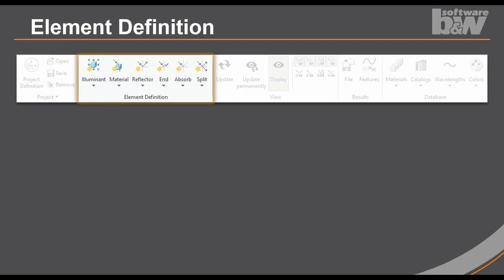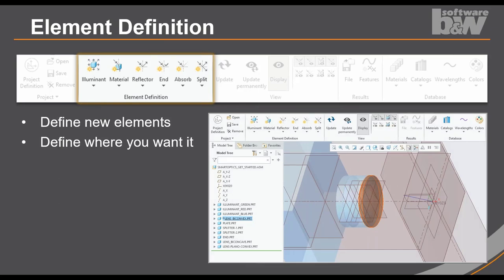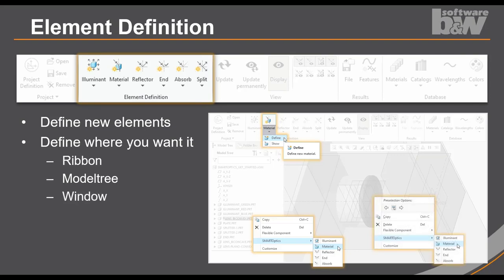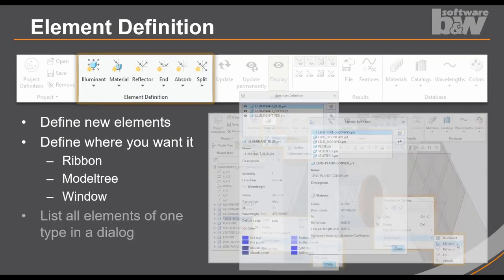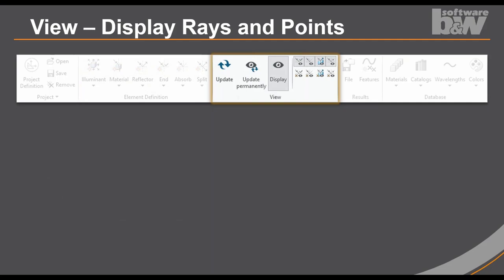The next group is an element group. All element definitions take place here. You define the luminance, the material, reflectors, and so on. And you can define it where you want. You can choose if you want to define it from the ribbon or use the context menus in the model tree or in the graphic window. And in this group, you also have access to the list of elements. For each element type, you will find a dialogue with a list where you have access to the most important information. By double clicking on the element, you will lead directly to the definition itself.